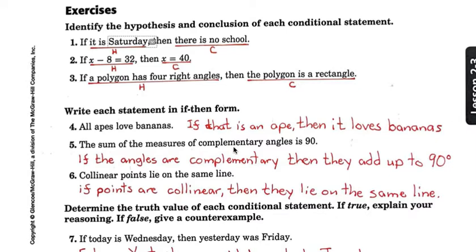Number five, the sum of the measures of complementary angles is 90. So the way I said it is, if the angles are complementary, I should have a comma there, then they add up to 90 degrees.